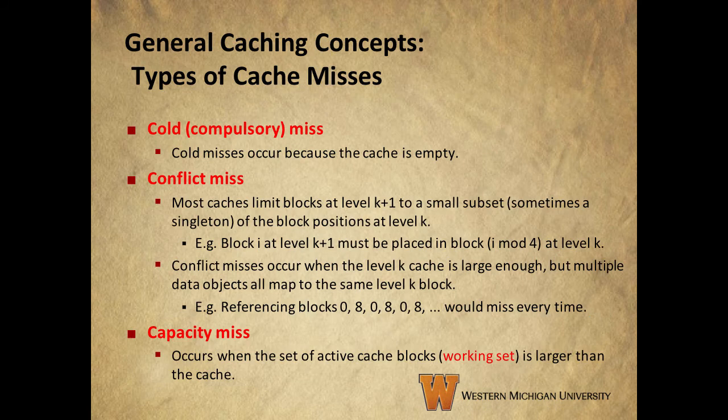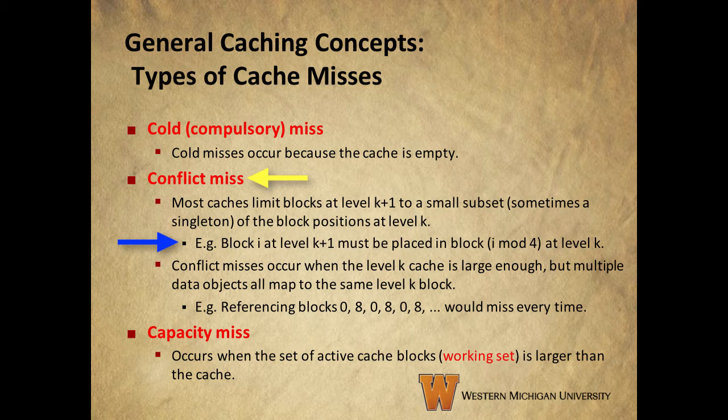Another thing to keep in mind about cache misses is that there are several different kinds of misses. A cold or compulsory miss occurs because the cache is empty — we will have misses until we fill the cache with some requested blocks. A conflict miss occurs when a cache at level K limits blocks at level K plus 1 to a small subset of the block positions at level K. This is the placement policy: large subsets of the blocks in memory may only be allowed to be placed in certain specific blocks in the cache.